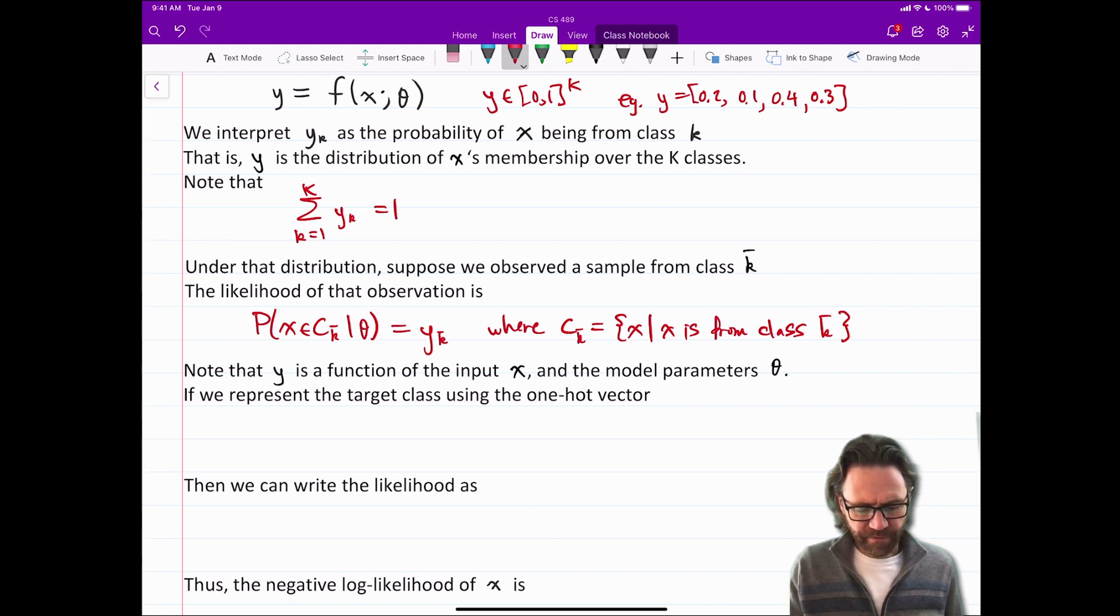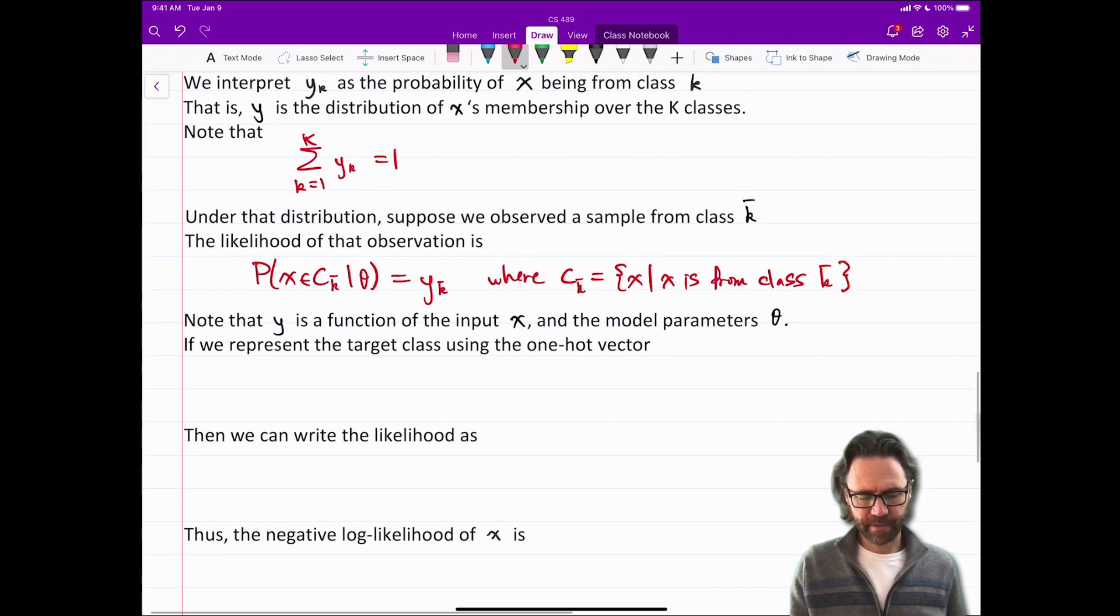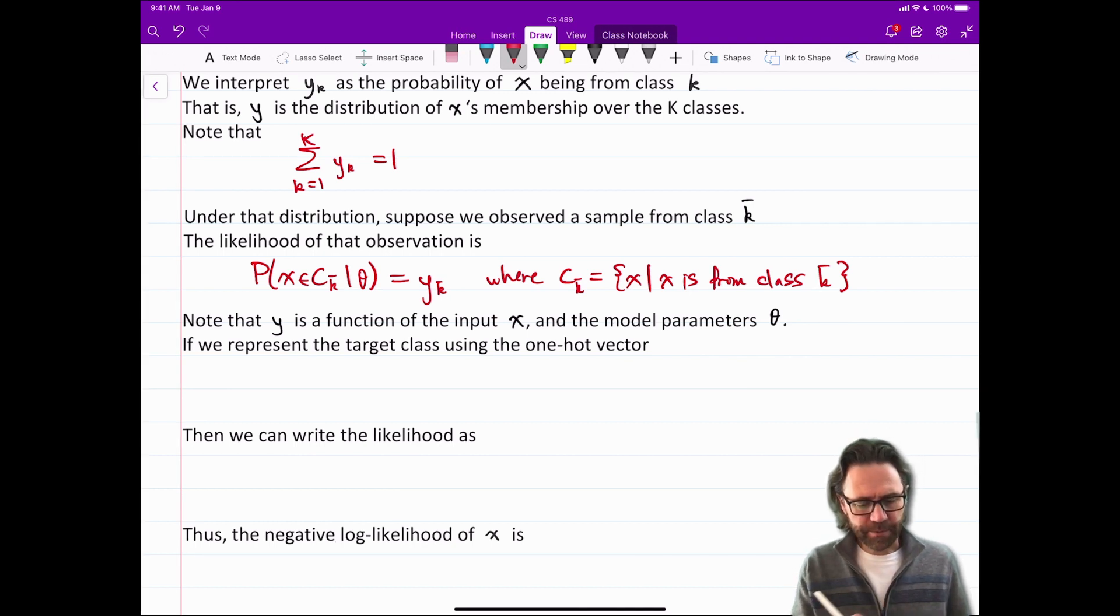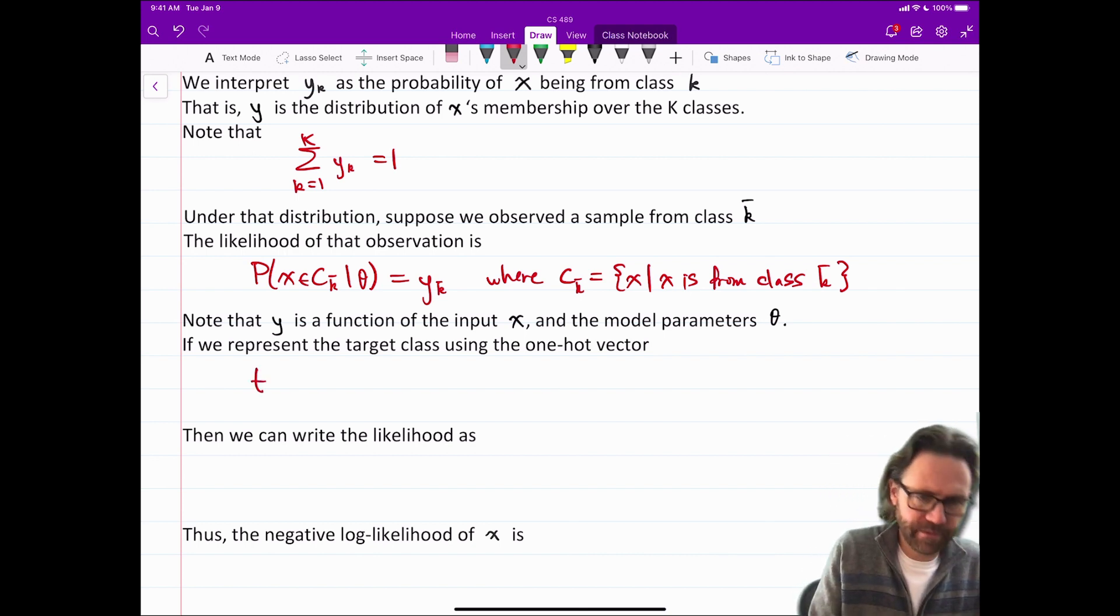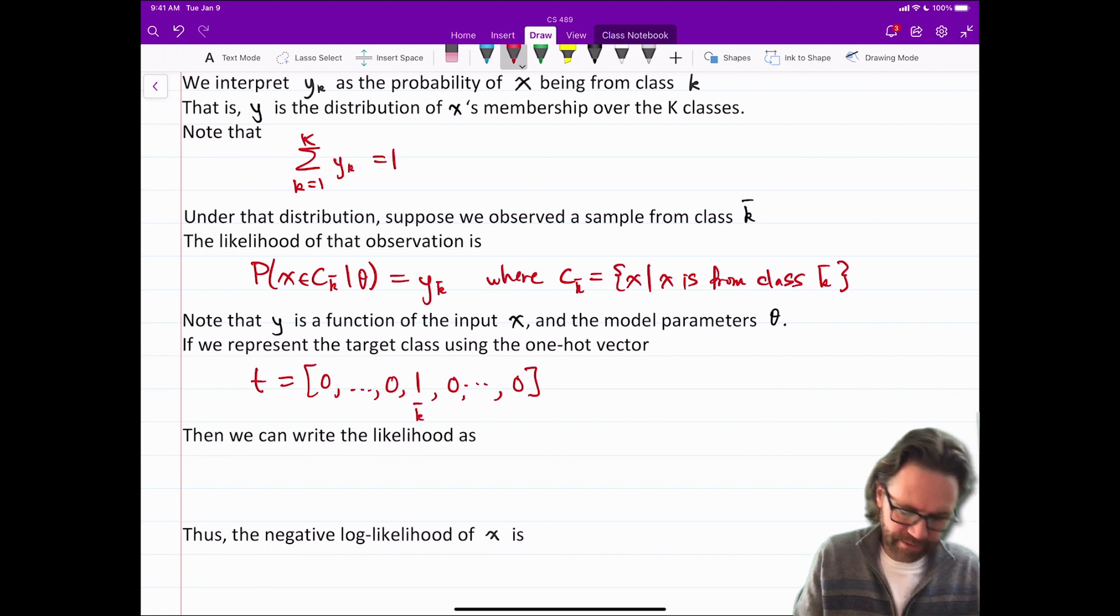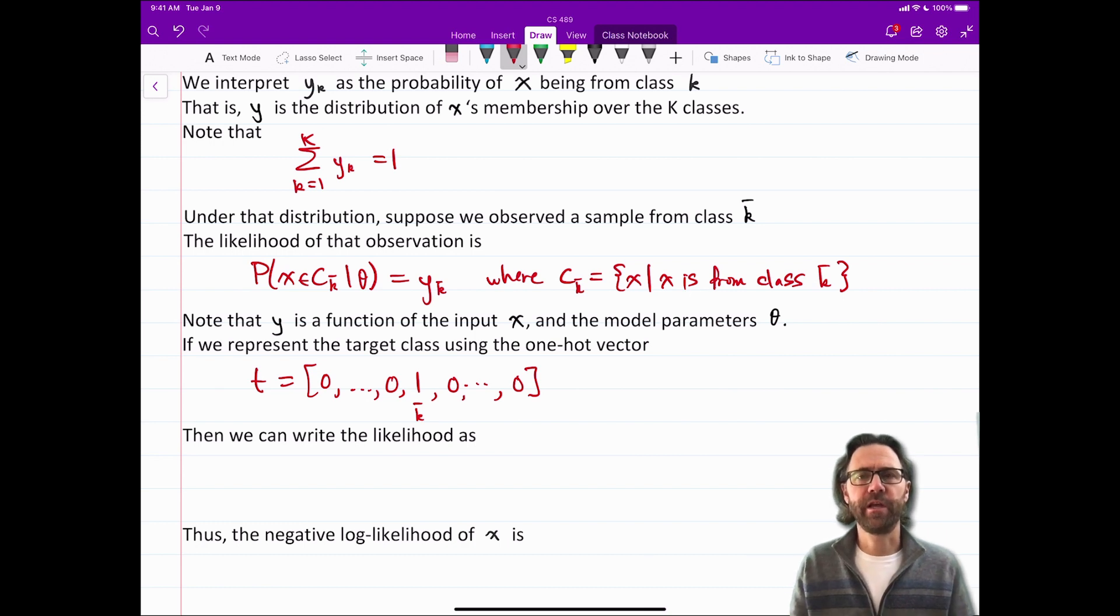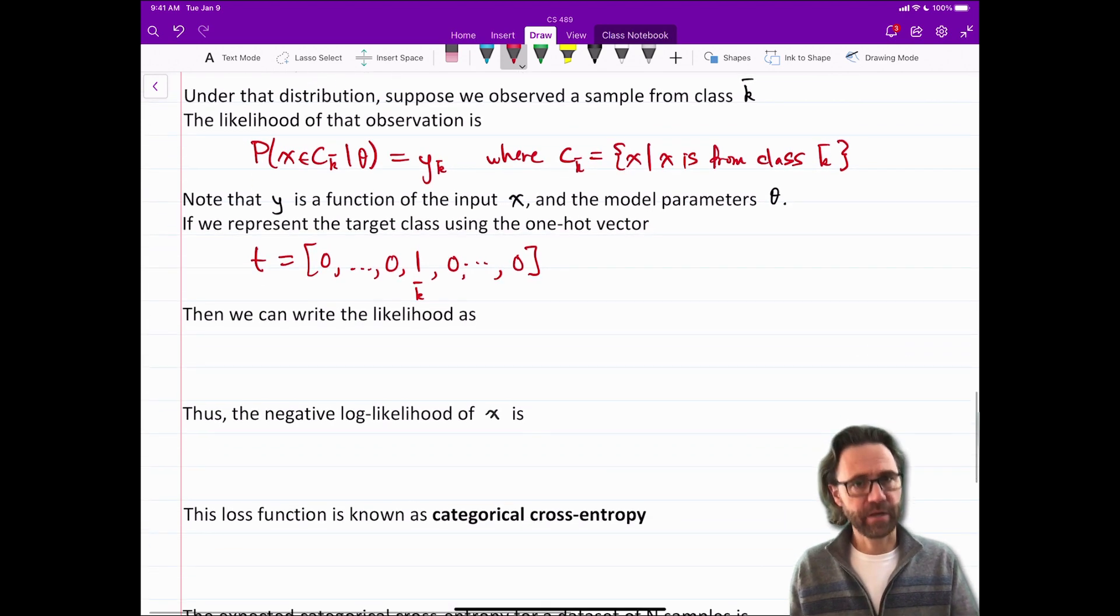So note that Y is a function of the input X in the model parameters theta. If we represent the target class using the one-hot vector T equals a whole bunch of zeros with a single one, then more zeros, and that single one happens at K hat. That's our output target then. It's a one-hot vector that indicates the particular target class. Given that vector, that target vector, we can rewrite the likelihood.